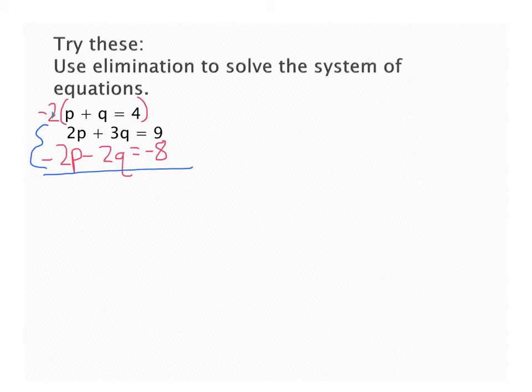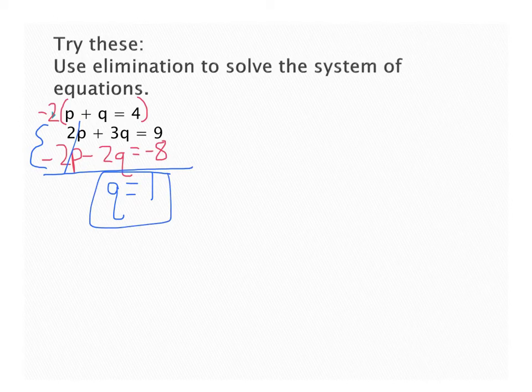Well, 2p and negative 2p are going to cancel, so they're gone. 3q and negative 2q gives me 1q, or just q. And 9 and negative 8 gives me positive 1. So I have one of my solutions.